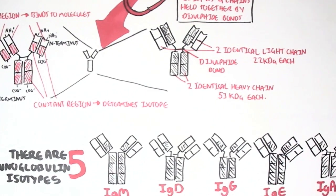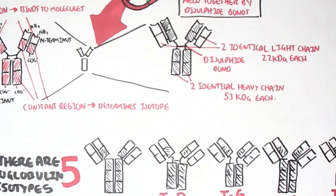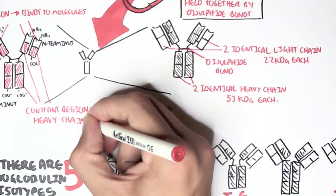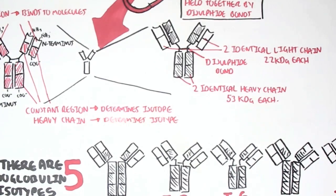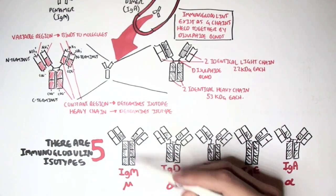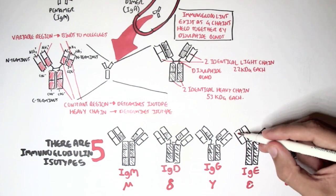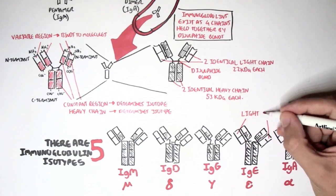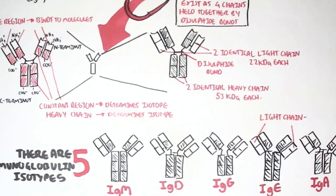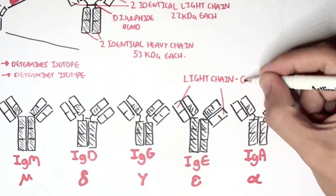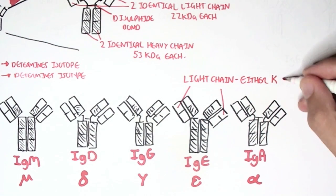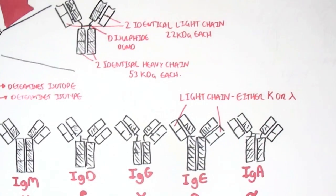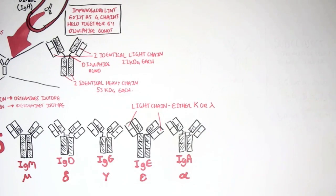Because the heavy chain is within the constant region, we can safely say the heavy chain determines what isotype or class the immunoglobulin will be in. As for the light chains, they can either be Kappa or Lambda, because these are the only genes involved in making the light chain.